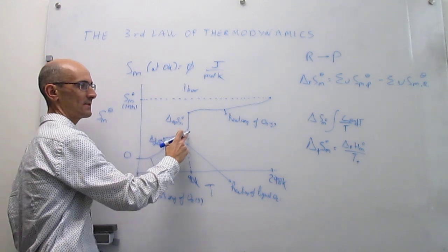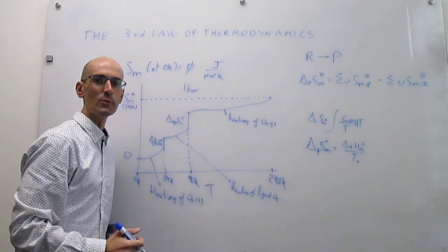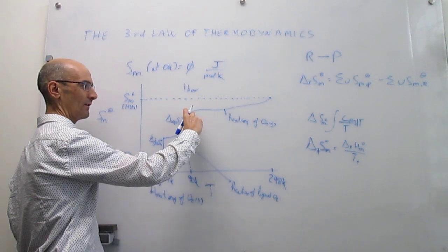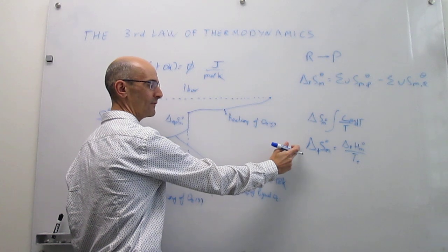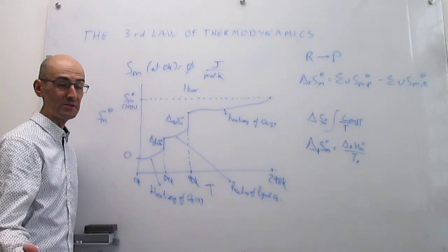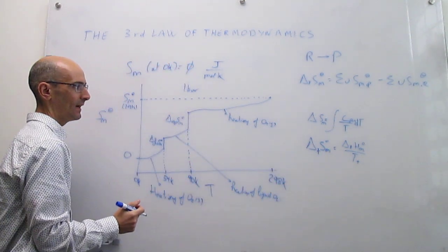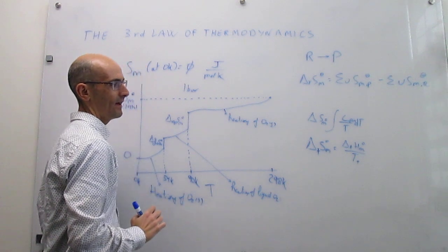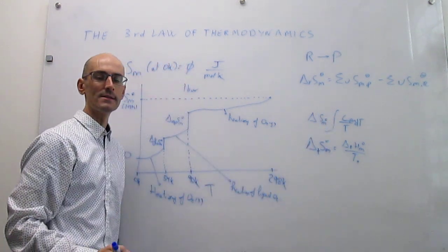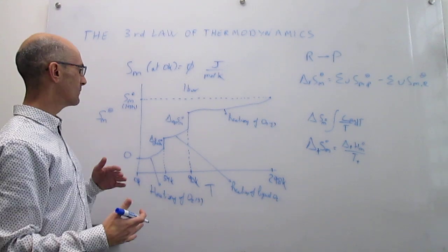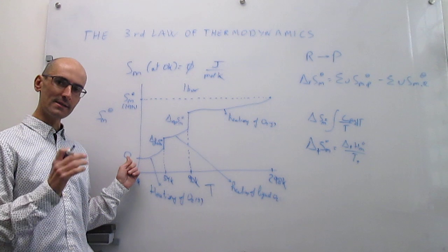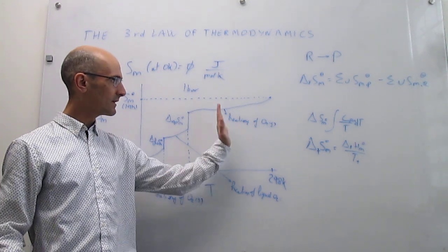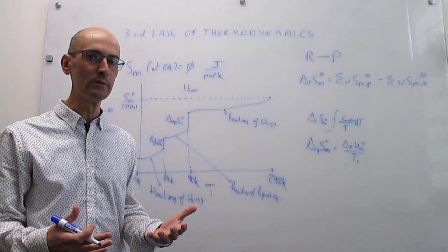Then you have the liquid — another heating process using that same integral expression, but now with the heat capacity of liquid oxygen. Bring that liquid oxygen to 90 Kelvin, then you have the vaporization phase transition — the fourth step — using delta H_vaporization divided by the temperature of vaporization, which is 90 Kelvin. After that, you have the gas, and you heat it to 298 Kelvin using the heat capacity of oxygen gas. Five steps in total, starting from zero Kelvin where the entropy is zero, all the way to 298 Kelvin for oxygen gas, allowing you to calculate the absolute molar entropy for oxygen.